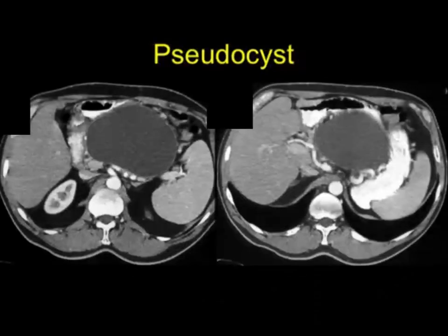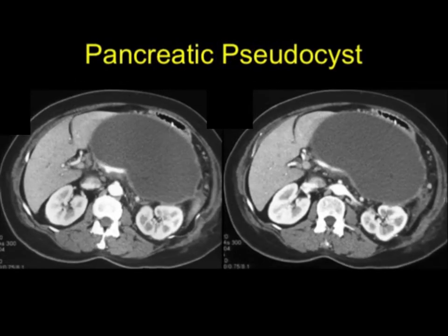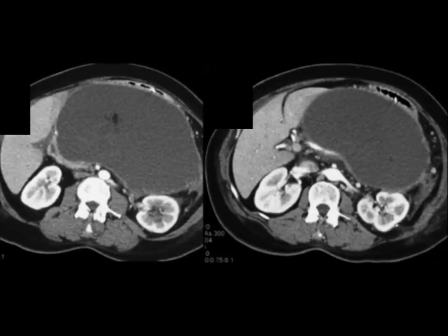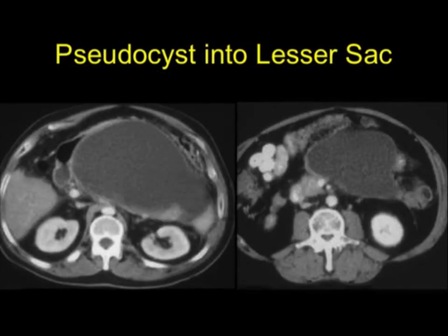We can see pseudocysts — well-defined fluid collections — most commonly in the lesser sac. More than 50% of these will resolve on their own over time. If they don't resolve and they're large, you could do a cyst gastrostomy, where a puncture is made through the stomach into the cyst to drain it. Here is one of the pseudocysts tracking into the lesser sac.